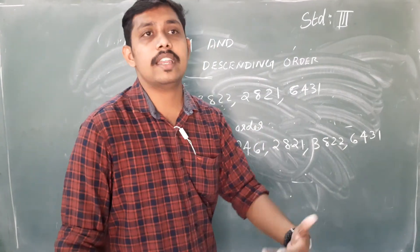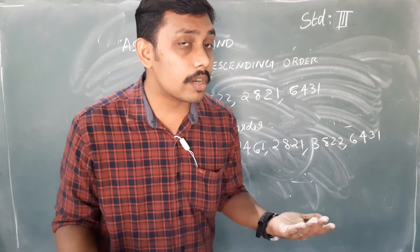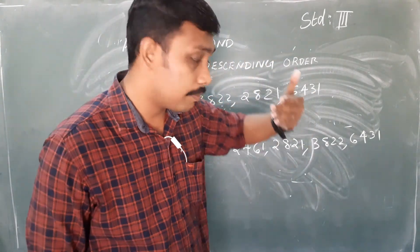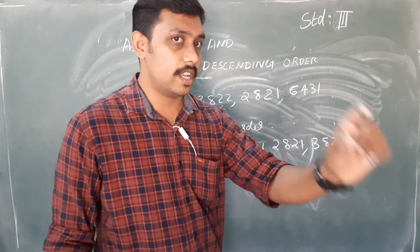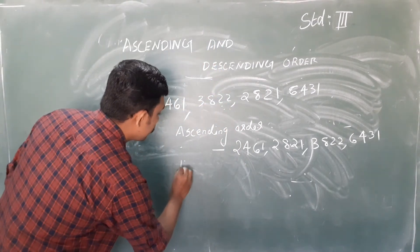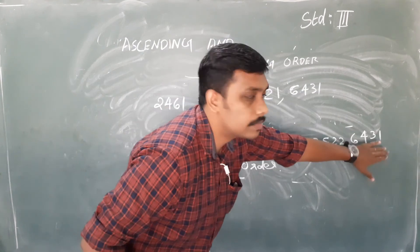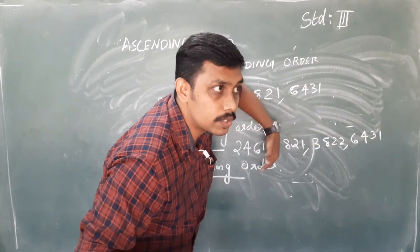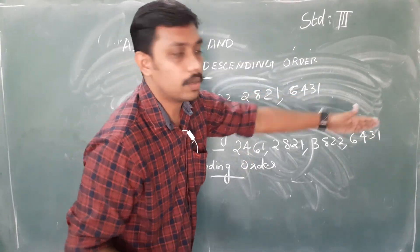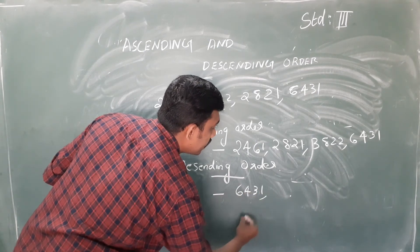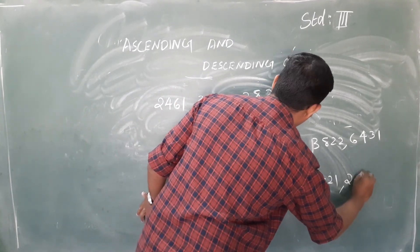Now, what is descending order? In ascending order we arrange from smallest to biggest. In descending order, we arrange from biggest to smallest — it is the reverse of ascending order. So descending order for the same numbers is: 6431, 3822, 2821, 2461.